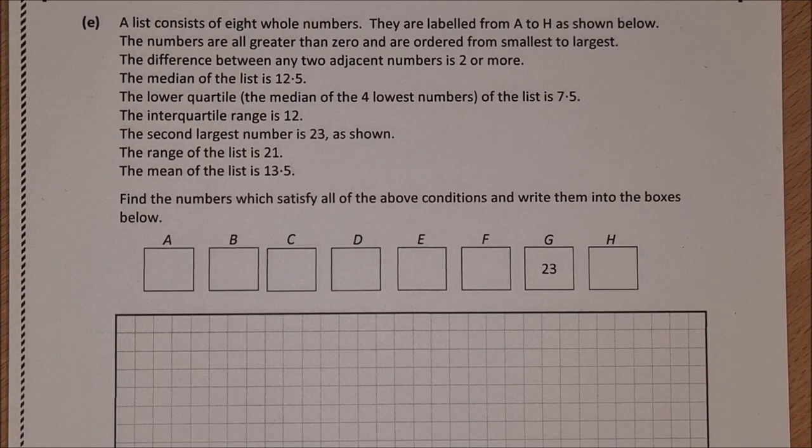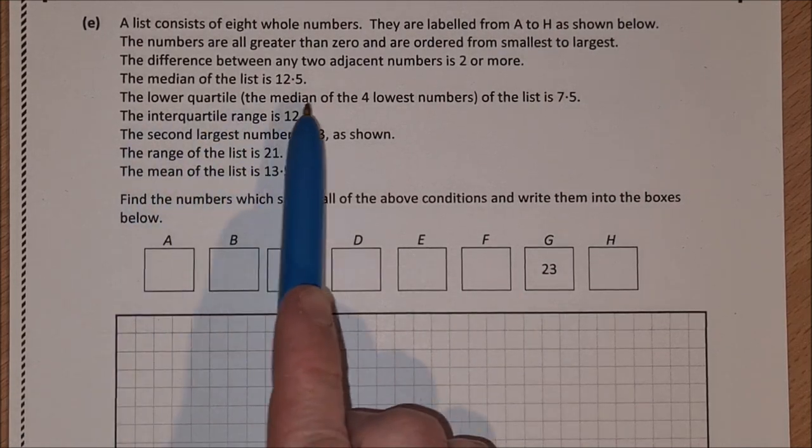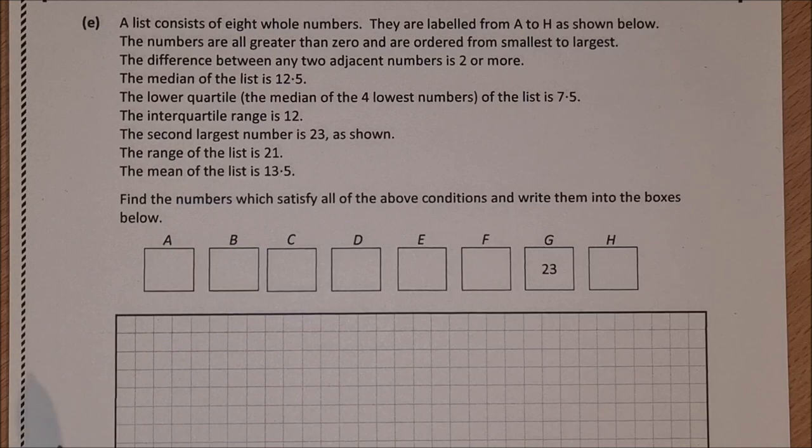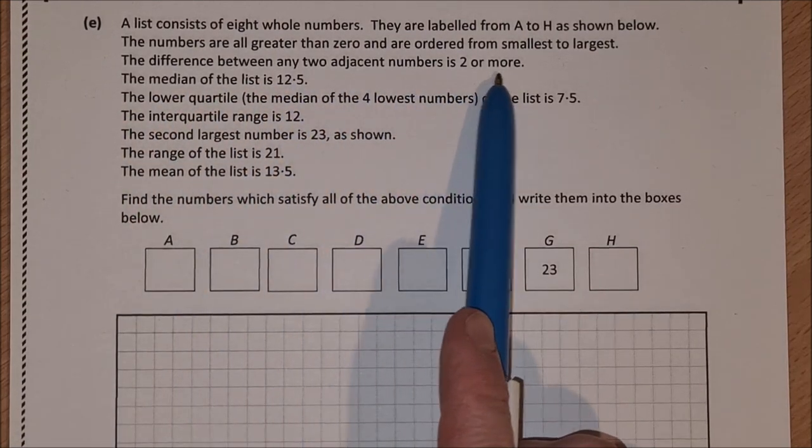A list consists of 8 whole numbers. They are labelled from A to H as shown below. The numbers are greater than 0 and are ordered from smallest to largest. The difference between any two adjacent numbers is 2 or more.